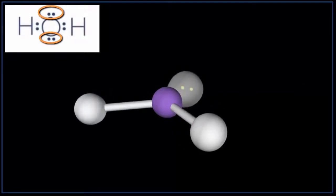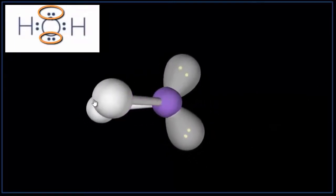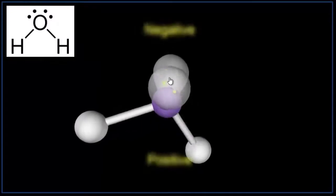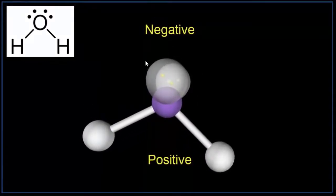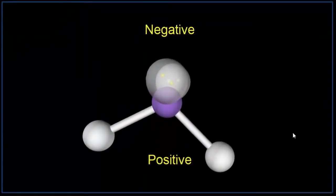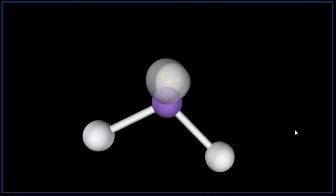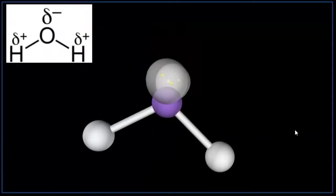We'll put one, two, and now we can see that the molecule is no longer symmetrical. We have a distinct top and bottom. Because we have this distinct top and bottom to the molecule, water is a polar molecule.